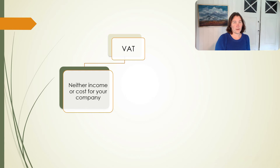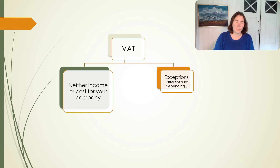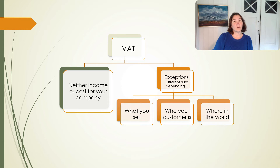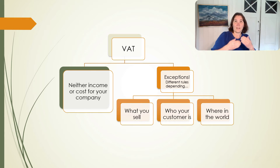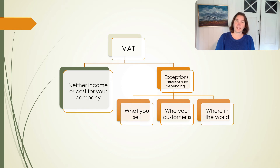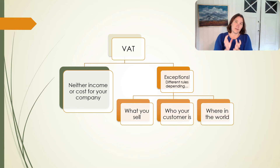One other really important thing to understand about the VAT is that there are always exceptions. When you think you understand and know the rules, there might be an exception, because there are different rules depending on what you're selling, who your customer is, and also where in the world your customers are, or where the thing you're selling is. So it's very important to understand what you're selling and who your customer is, because that can affect which rule to look at regarding the VAT. And there are always some exceptions — when you think you know something, there might be an exception.